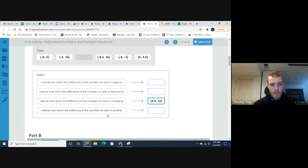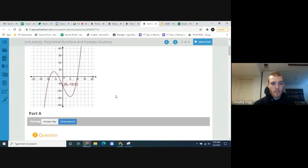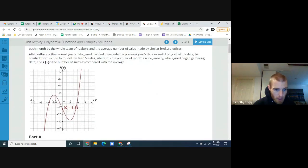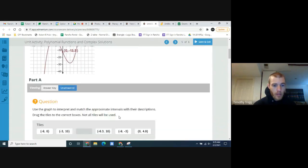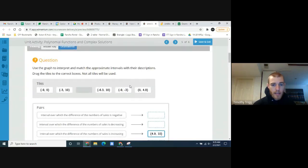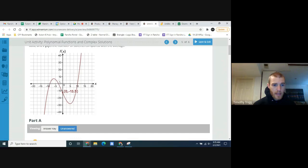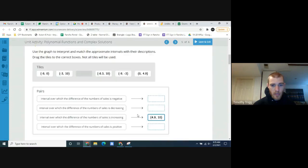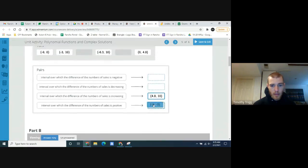Interval over which the difference of the number of sales is positive. So that would be, it's positive here, from here to here, and also past 10. So they're probably going to look for this interval right here. Looks to be maybe this right here. Negative 9 to negative 3. So from negative 9 to negative 3, it was above the x-axis. So positive. Okay. Let's move on.